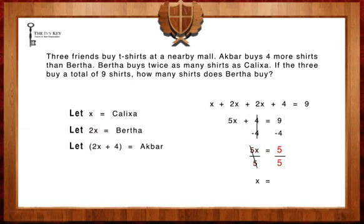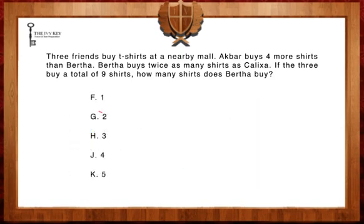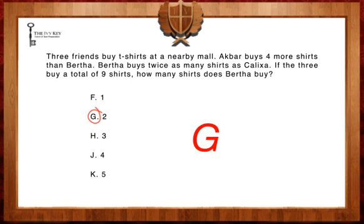5 divided by 5 leaves us with 1, hence X equals 1. Since Bertha is represented as 2x, 2 times 1 equals 2 — Bertha bought two shirts. Therefore, the answer is G. I hope this lesson helped you better prepare for your test.